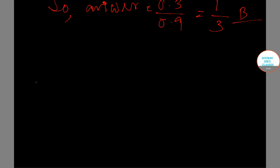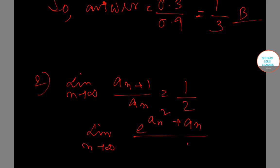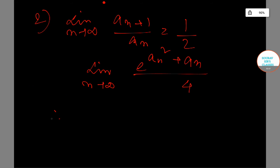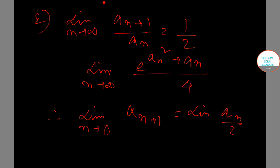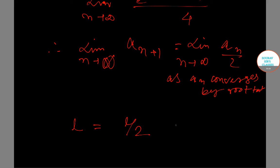Let's move on to question number 2. We have limit as n → ∞ of a_{n+1} / a_n = 1/2, and we need to find the limit of e to the power (a_n² + a_n / 4). We can say limit of a_{n+1} = limit of a_n / 2, so a_n converges by the root test. This gives L = L/2, which means L = 0. So our correct answer is 1/4, that is option D.